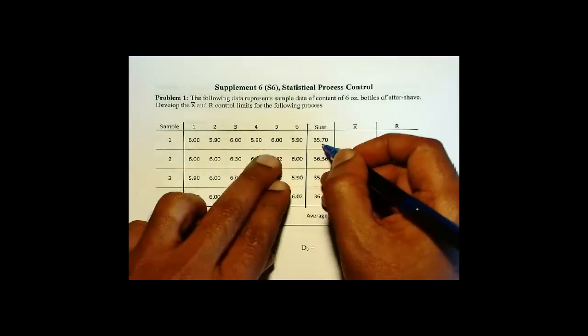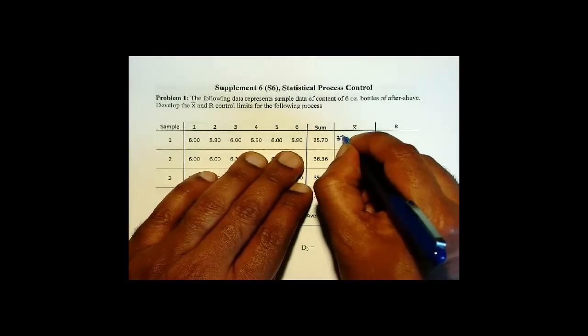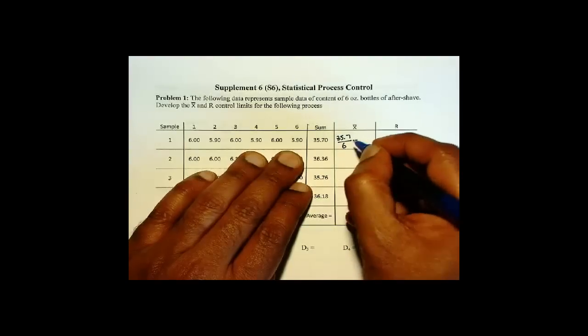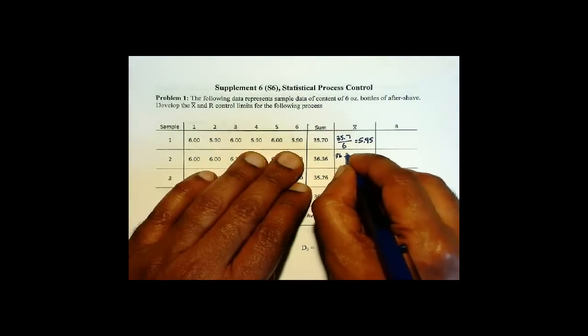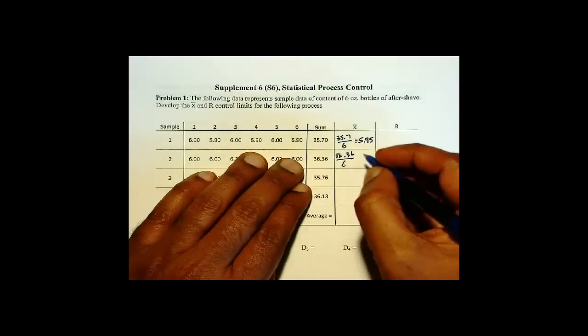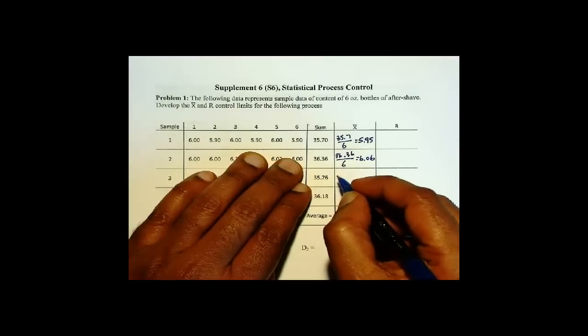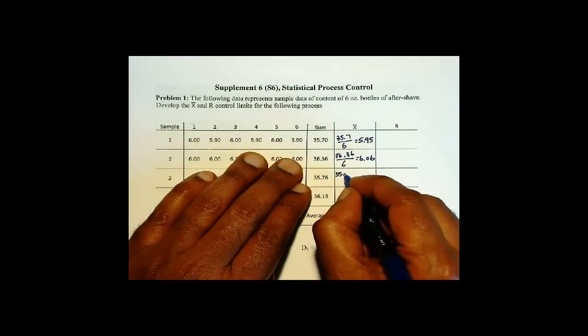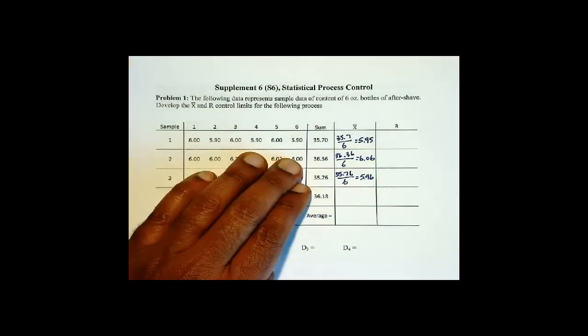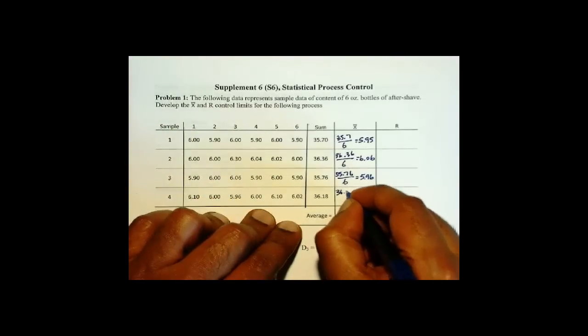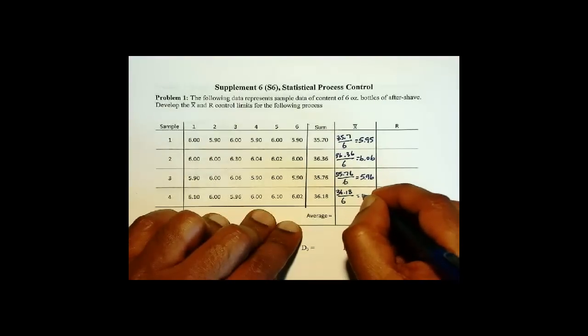We have the sum for each of those samples. So x-bar then is 35.7 over 6 is 5.95. 36.36 over 6 is 6.06. Then 35.76 over 6 is 5.96. And then 36.18 divided by 6 is 6.03.